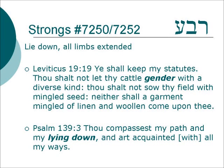Behind all these meanings, this root Ravah means to lie down with all the limbs extended. In other words, if a person was lying flat out in four directions — their arms and their legs — it's related to the idea of sexual intercourse, and we're going to see the idea of four comes from multiplying to make a multitude. Leviticus 19:19 — You shall keep my statutes. Thou shalt not let thy cattle gender with a diverse kind. So the idea is that cattle are multiplying.